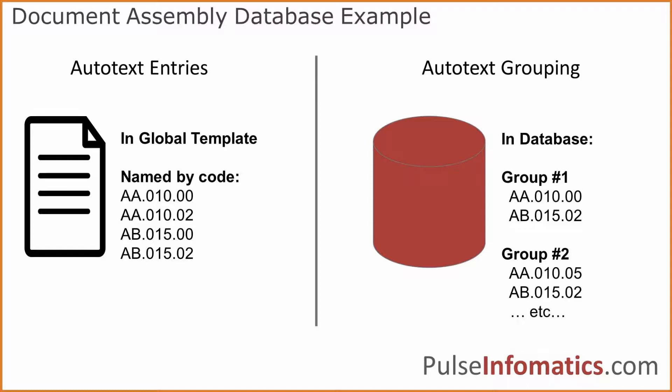AA010 is a specific block of text, and then 00, 02, 04 would specify a variation on that text. So you see AA010.00, and then AB015.00 and AB015.02. That's how the auto text entries are created for this contract assembly system.